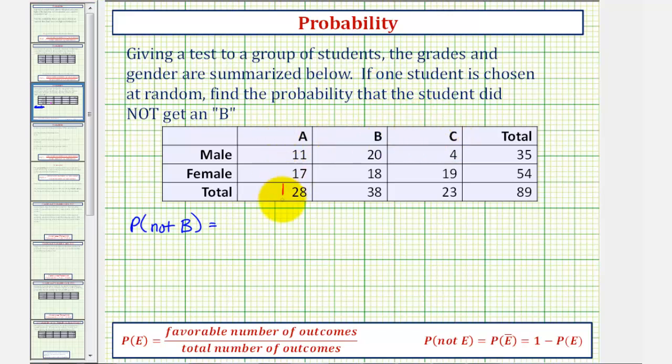Notice, twenty-eight students received an A, which is not a B, and twenty-three students received a C, which is not a B. And then, finally, a total of eighty-nine students took the test.